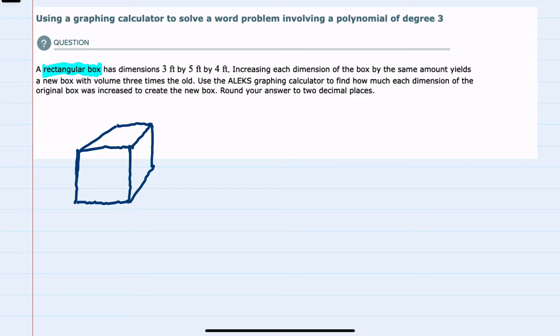The box has dimensions 3 by 5 by 4. We're told that if we increase each dimension of this box by the same amount, we'll have a new box that has three times the volume of the old one.